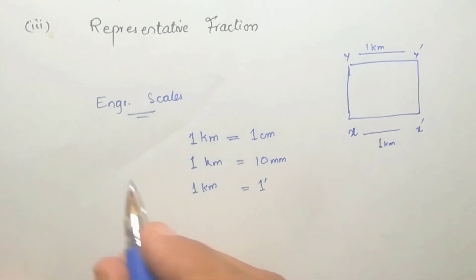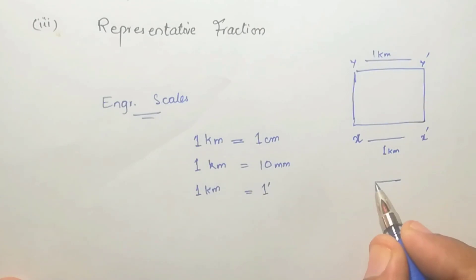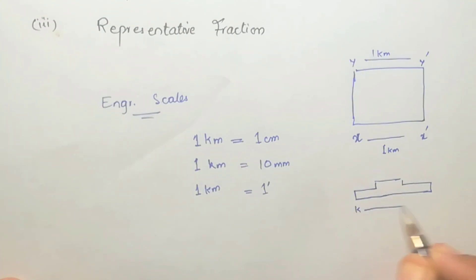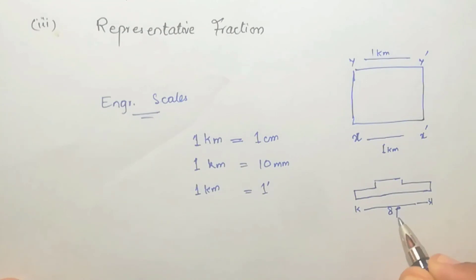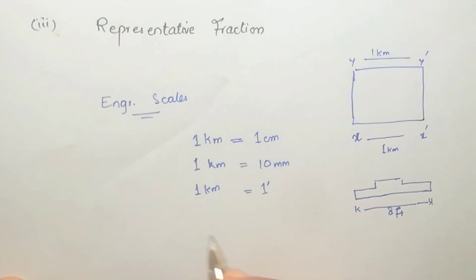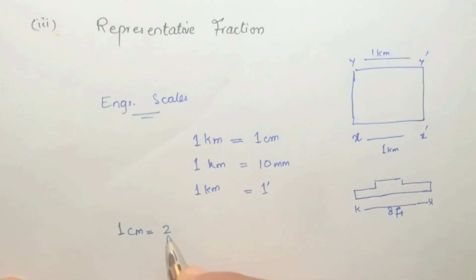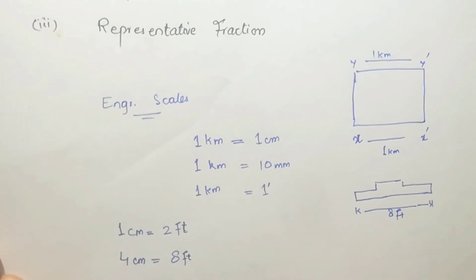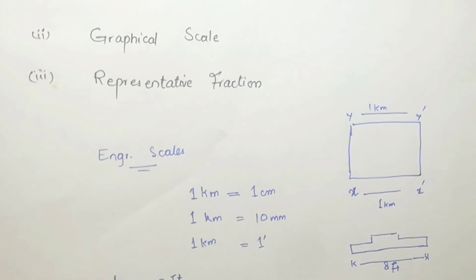For example, consider another object with a length of 8 feet. I want to show it on a drawing sheet. This is a large length, so I cannot show it at full size. The Engineer's Scale allows us to represent such lengths in a reduced form on the sheet.